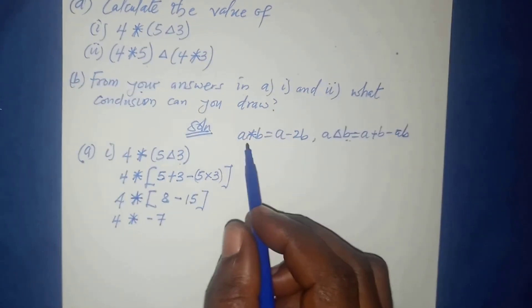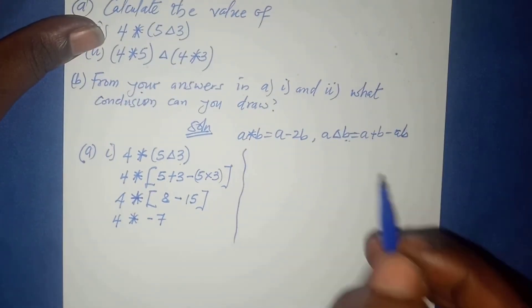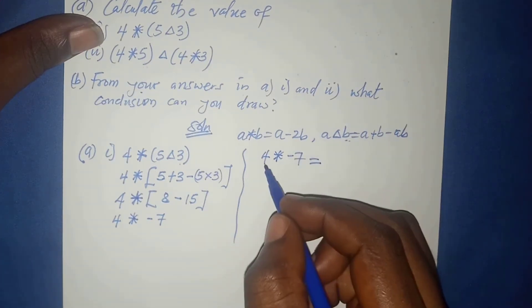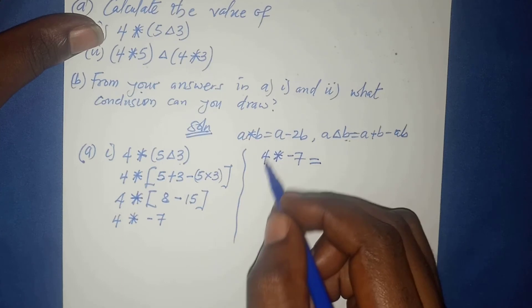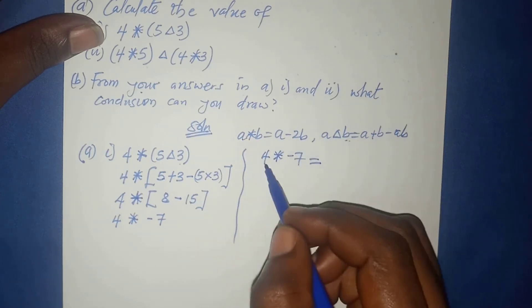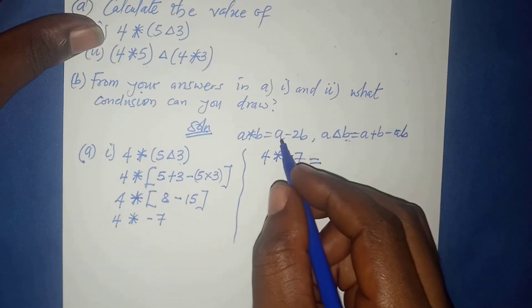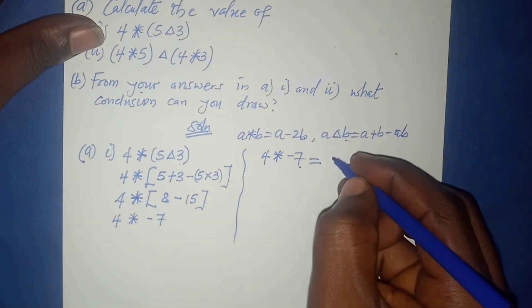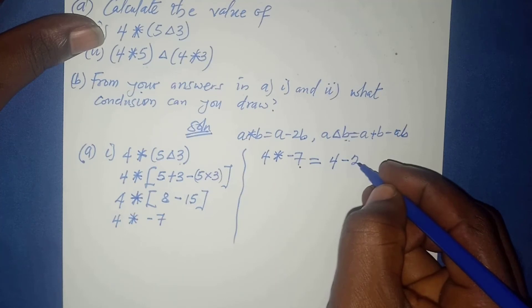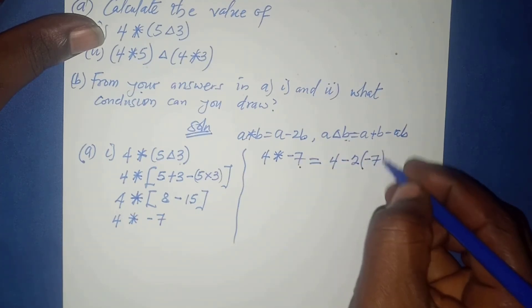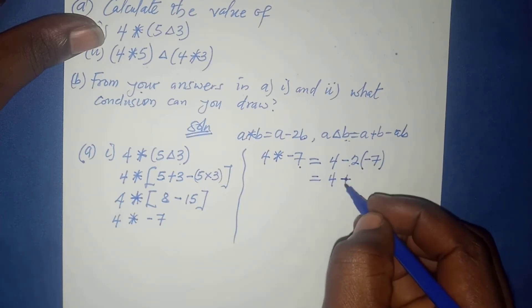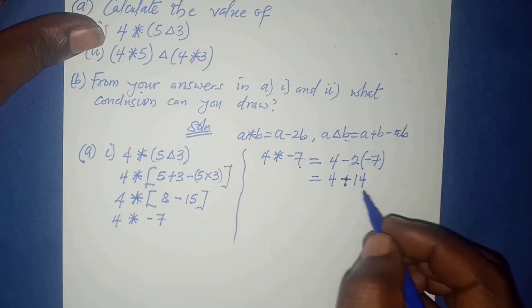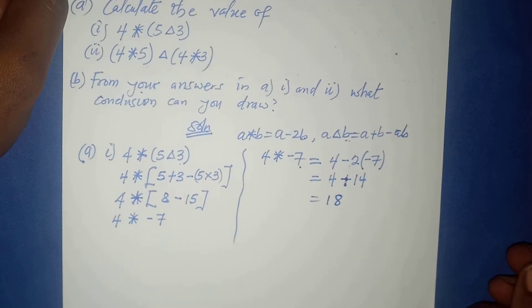Four star negative seven: with a equals four and b equals negative seven, applying a minus 2b gives four minus two times negative seven, which equals four plus fourteen, which equals eighteen.